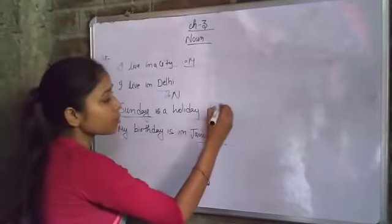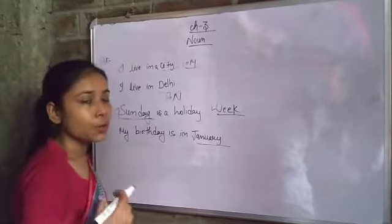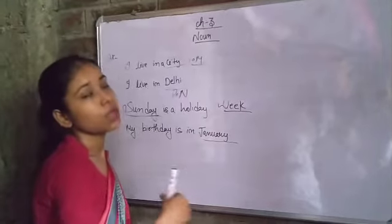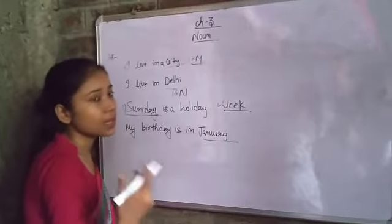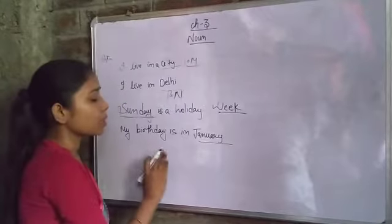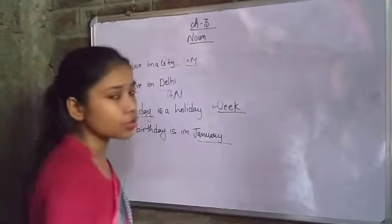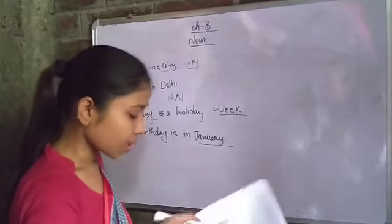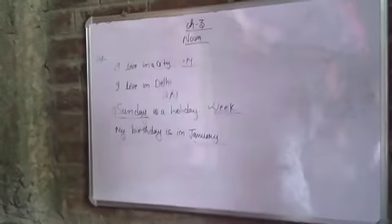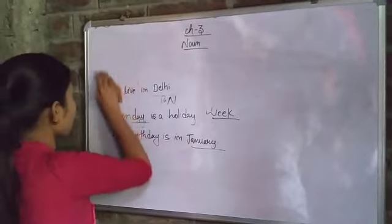When we say 'week,' that is a common noun because it contains multiple days. But when we say 'Sunday,' it refers to a specific day, so it becomes a proper noun. Similarly, 'year' is a common noun, but 'January' is a proper noun. 'My birthday is in January' — so 'year' is common and 'January' is proper.